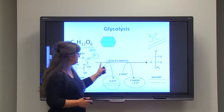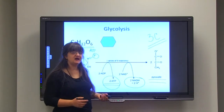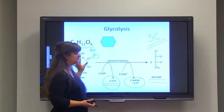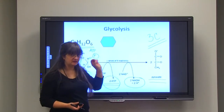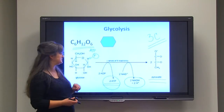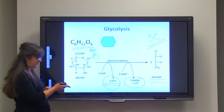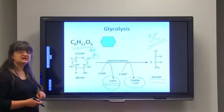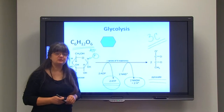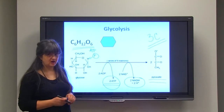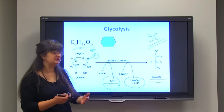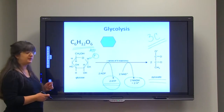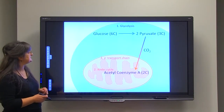Glycolysis is a series of nine reactions. Of course, simply making glucose into pyruvate would be a positive reaction spontaneously, so that alone is not what's happening. Importantly, glycolysis can happen whether oxygen is present or not, and we will learn more about what happens when oxygen is absent.